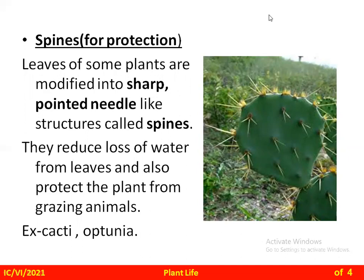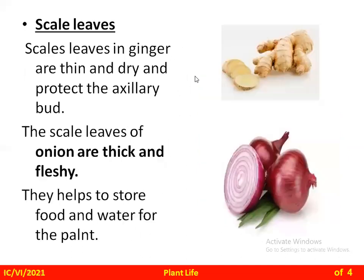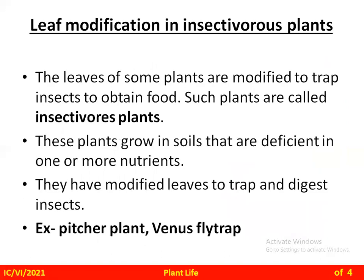The next modification is scale leaves. In some plants the leaves are modified into scales. For example, in ginger the scale leaves are thin and dry and protect the axillary bud. In onions, the scale leaves are thick and fleshy. The role of scale leaves is to store food and water for the plant.